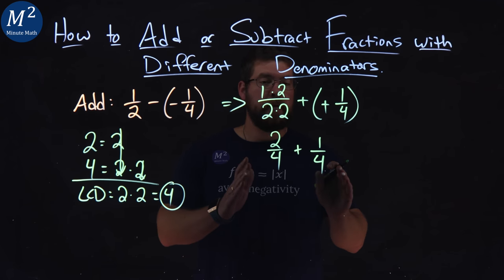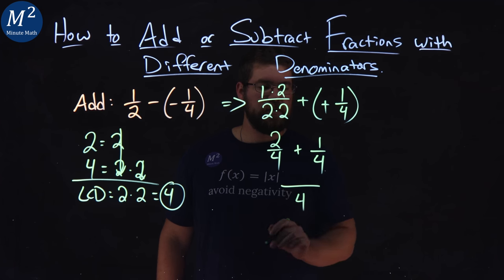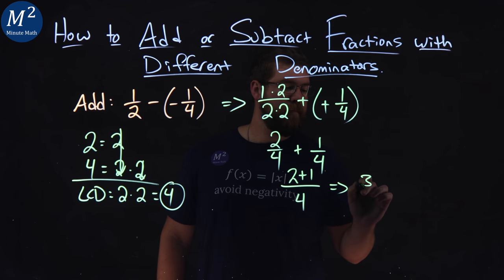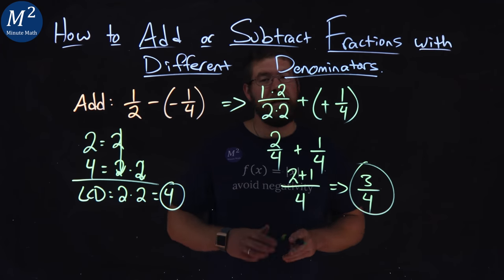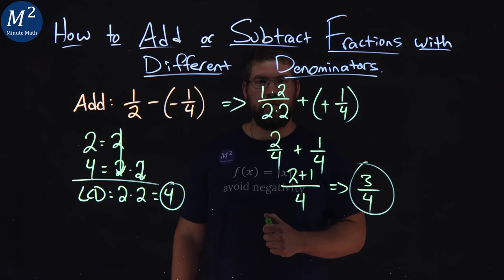Now we have common denominator of four. We can combine it to be one large fraction, four, with two plus one up top. And two plus one becomes three, over four. And so, one-half minus a negative one-fourth simplifies to be three-fourths.